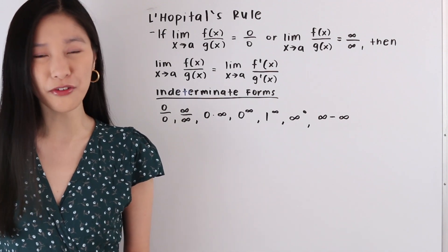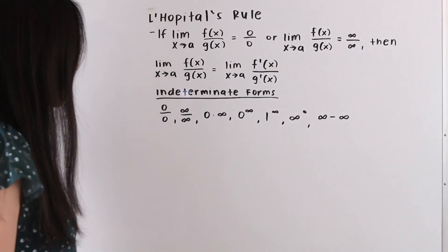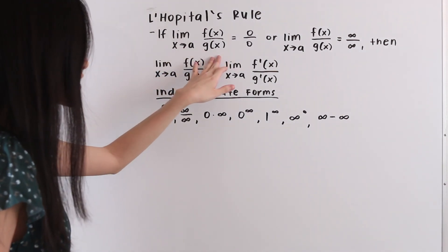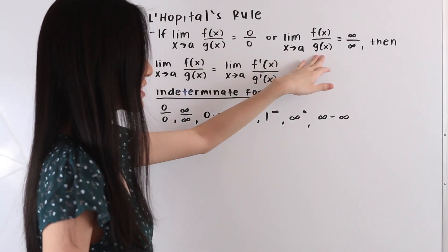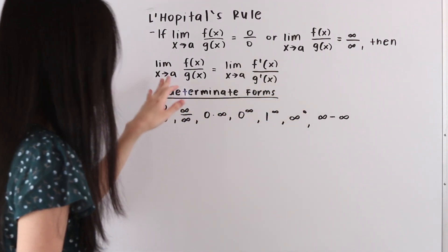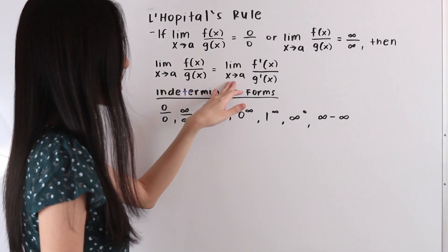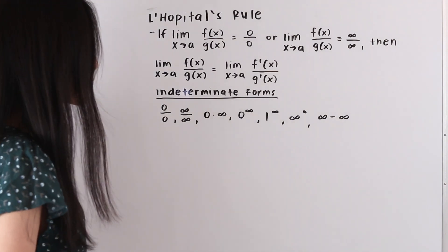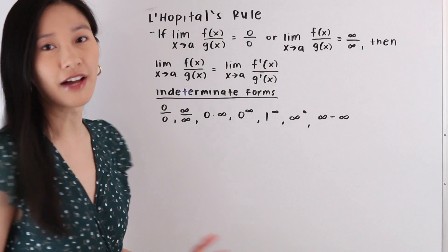Hi everyone, it's Janine here, and in today's video we'll be taking a look at more examples of L'Hôpital's rule. Recall from our last video that L'Hôpital's rule tells us that if the limit as x approaches a of f(x) over g(x) is equal to 0/0, or infinity over infinity, then the limit as x approaches a of f(x) over g(x) equals the limit as x approaches a of f'(x) over g'(x). Essentially, we're taking the derivative of the numerator and denominator separately to evaluate our limit.